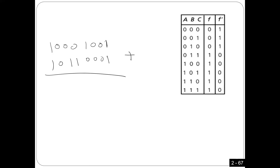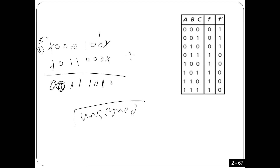Let's do the addition: 1 plus 1 is 0 carry 1; 1 plus 0 plus 0 is 1; 0 plus 0 is 0; 1 plus 0 is 1; 0 plus 1 is 1; 0 plus 1 is 1; 0 plus 1 is 1; 1 plus 1 is 0 carry 1. Now let's decide: if this number is unsigned, is there an overflow? Simple: is there a carry? Yes. So there is unsigned overflow — the result is wrong because I need five bits instead of four bits.